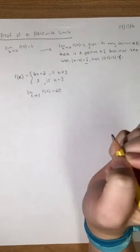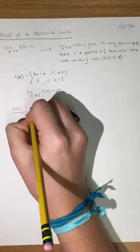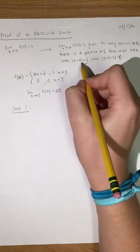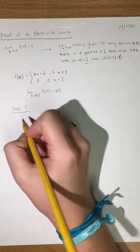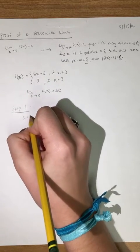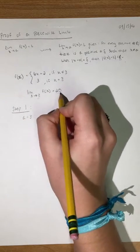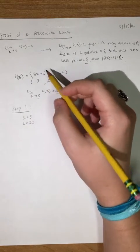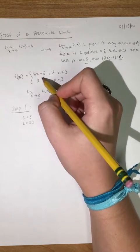We're going to do step 1, where we work backwards. We know that a equals 3, because this is a, and that 20 represents l. And this is going to be our function, the 6x plus 2.